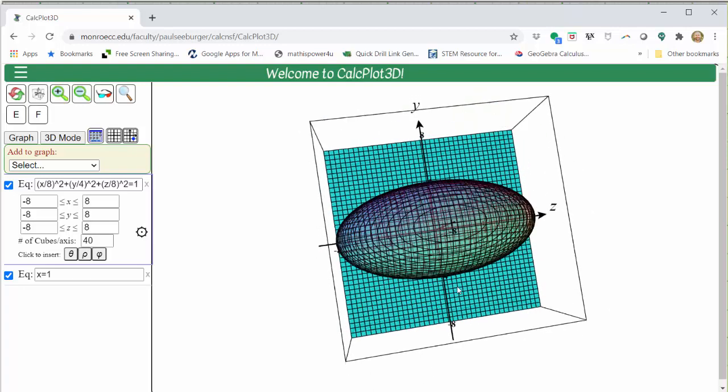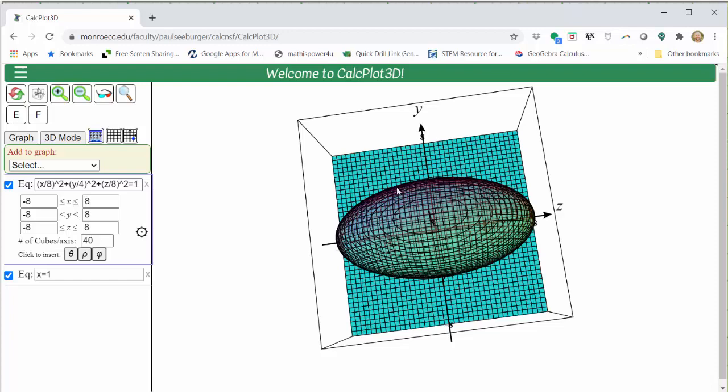Looking down on the x equals one plane here, we can see the x equals one trace is a non-circular ellipse.